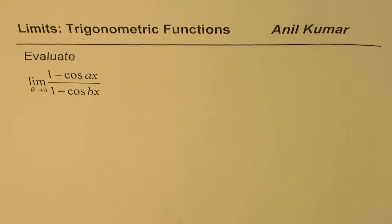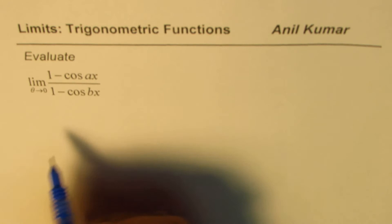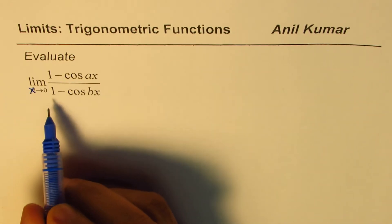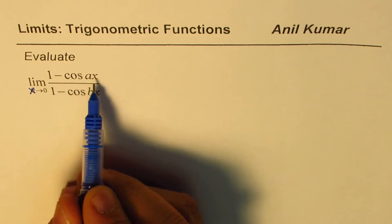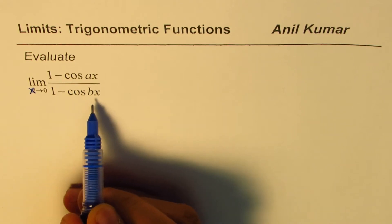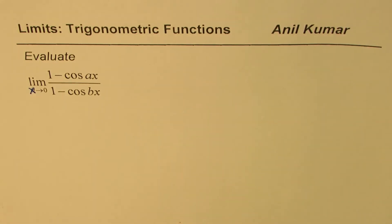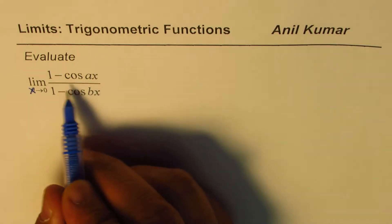I'm Anil Kumar. In this video we'll find limit for trigonometric function. The example here is a bit complicated, we need to really simplify this and then find the limit. The question is to evaluate limit when x approaches 0 for (1 - cos ax) divided by (1 - cos bx). We have done similar examples earlier. You can always go through them, pause the video, answer the question, and then look into my suggestion.